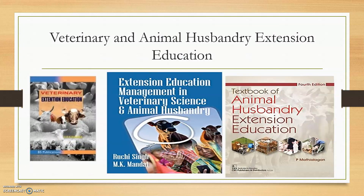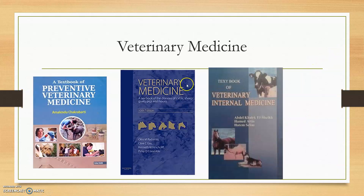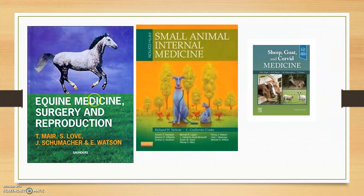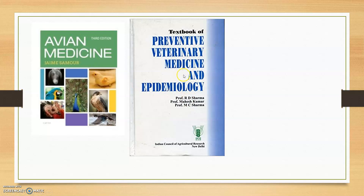For animal husbandry extension, the Madhya Ragan book is very good. For veterinary medicine, Amalendu Sukharbarthi's Preventive Veterinary Medicine is a good book. There are also books for equine respiratory medicine and surgery, ophthalmic sessions, equine medicine and surgery, small animal surgery and medicine, ruminant medicine, and avian medicine. One book is particularly good for Indian students as it covers epidemiology in the Indian scenario and disease conditions prevailing due to epidemiological reasons.